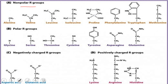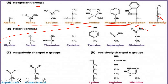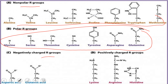On the basis of R groups, amino acids are classified into four categories. First: non-polar R groups, such as CH3 or CH(CH3)2. Second: polar R groups. Third: negatively charged R groups — aspartic acid and glutamic acid — which have an extra COOH group. Fourth: positively charged R groups — basic amino acids — which have an extra NH2 group in their R group.